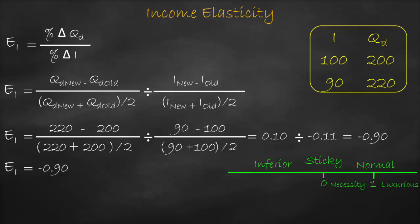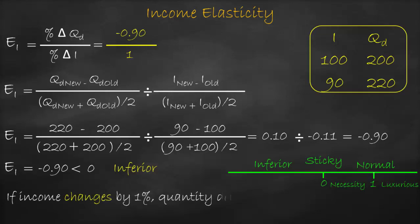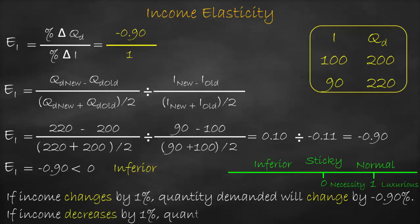Here, income elasticity equals negative 0.9 — it is negative and lower than zero, therefore it is an inferior good. We interpret it as: income elasticity equals negative 0.9 divided by 1, which equals negative 0.9. This means if income changes by one percent, quantity demanded will change by negative 0.9 percent, or more precisely, if income decreases by one percent, quantity demanded will increase by 0.9 percent.